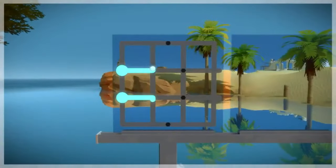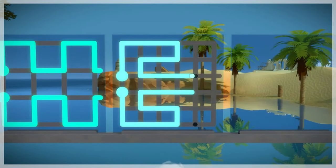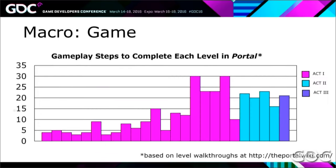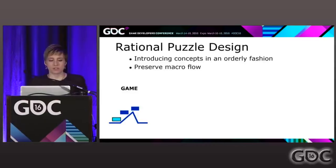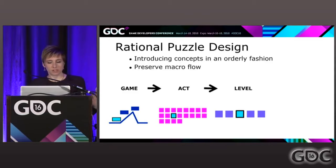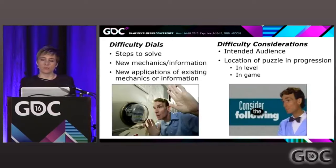He also stresses the importance of exploratory design and not assuming the solution before you craft a puzzle. Some argue puzzles should be a linear progression, allowing the deliberate management of a player's experience, whereas others suggest non-linear design enables player agency. Jolie Menzel says puzzles need to be rational, show the goal, and have clear information and feedback. She also gives tips on how to modulate difficulty in puzzles by altering things like the steps it takes to solve.